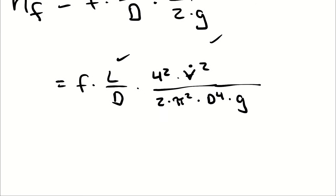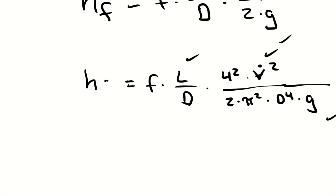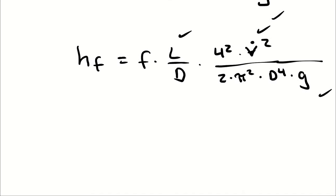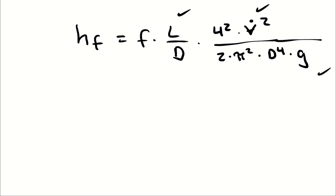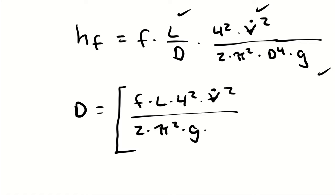I know L, I'm solving for D, I know gravity, I know volumetric flow rate, and I know H_F. So D is going to be the fifth root of F times L times 4 squared times volumetric flow rate squared, divided by 2 times pi squared times gravity times the friction head.